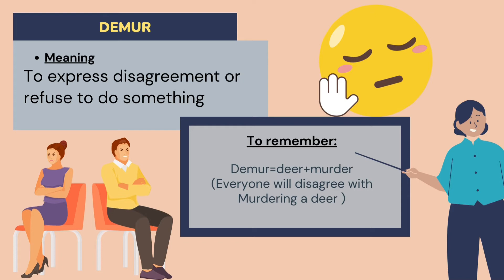To memorize this word: demure — think 'deer murder.' Everyone will disagree with murdering a deer. They will not agree to murdering an animal like a deer, so they will demure.